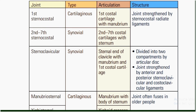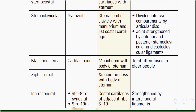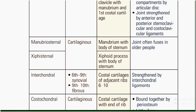The sternoclavicular joint is a synovial joint articulating the sternal end of the clavicle with the manubrium and first costal cartilage. It is divided into two compartments by an articular disc and is strengthened by anterior and posterior sternoclavicular and costoclavicular ligaments.